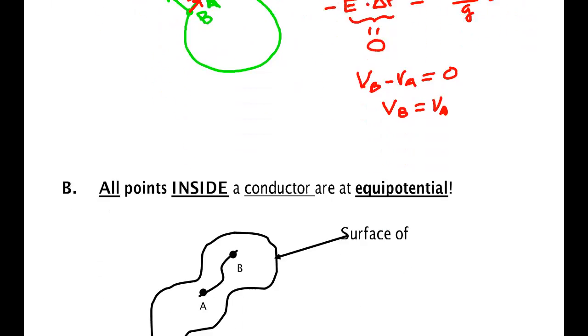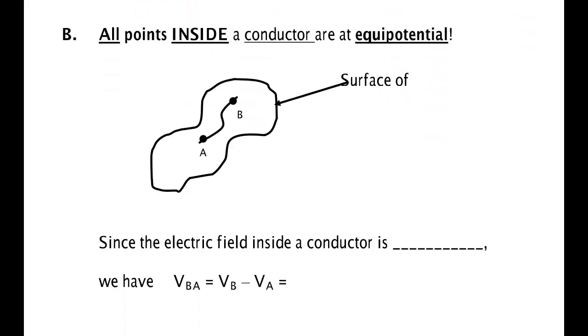Furthermore, it's not only the points at the surface that are at equal potential. All the points inside the metal, even if it's hollow, are at the same equal potential. Now how do we know that? Well, if you're inside a conductor like this—this is metal, okay, inside this point...